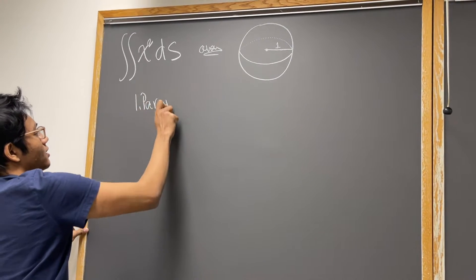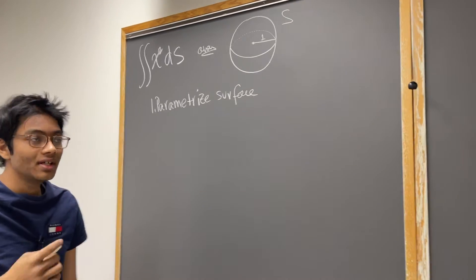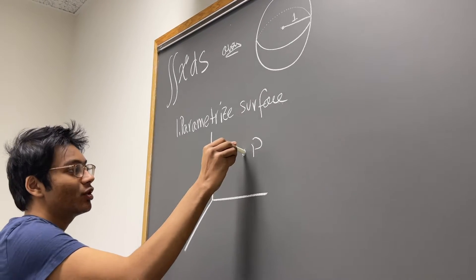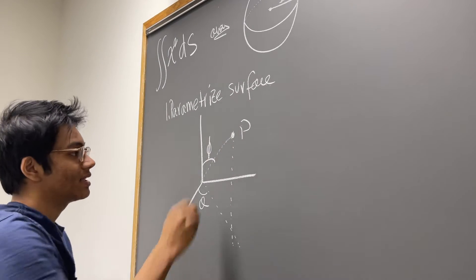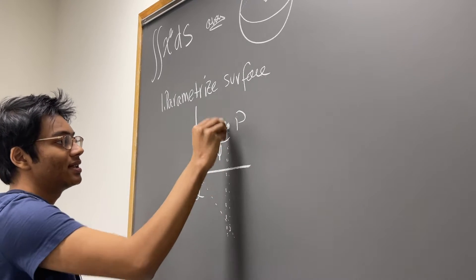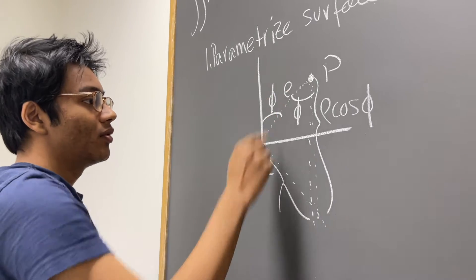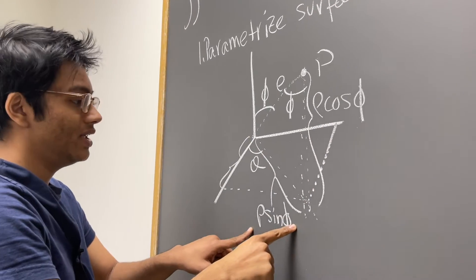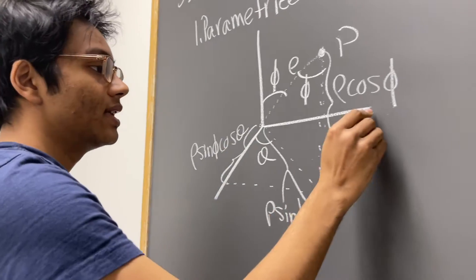Our surface here is s, the unit sphere. To parametrize it, we're going to start by considering spherical coordinates. We consider a point p in spherical coordinates making an angle of theta with the x-axis and an angle of phi with the z-axis. This gives us z equal to rho cosine phi, and the xy-plane projection is rho sine phi. So the x projection is rho sine phi cosine theta — this is something you should never memorize, derive it every single time.